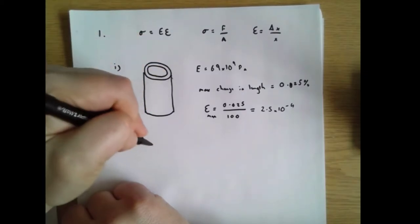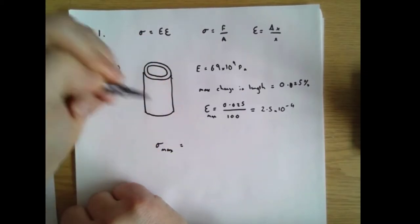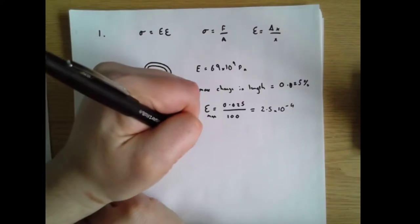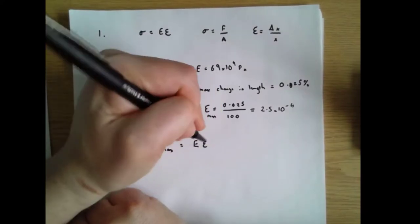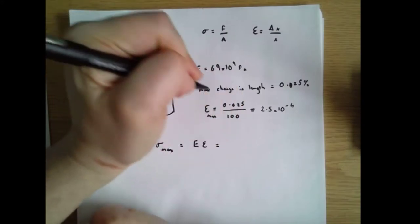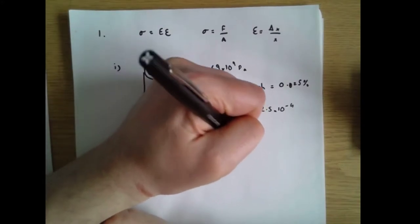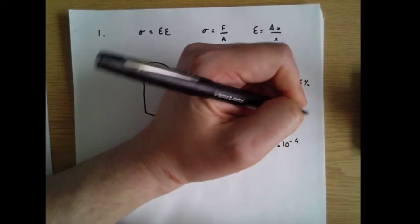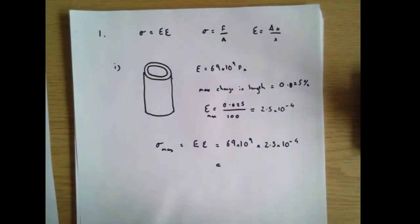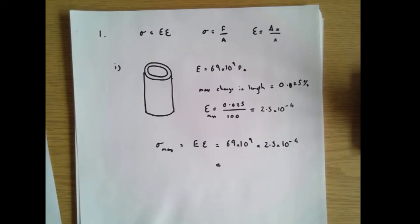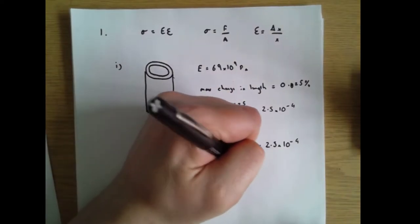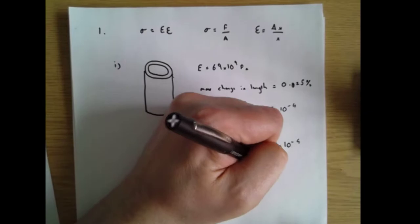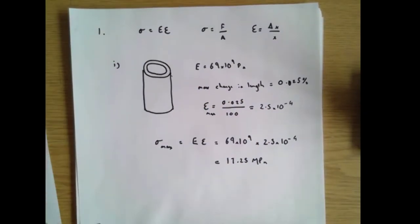We can turn that into a maximum stress using stress equals Young's modulus times strain, which equals 69 times 10 to the 9 multiplied by 2.5 times 10 to the minus 4, which equals 17.25 megapascals. That's the answer for part one a.